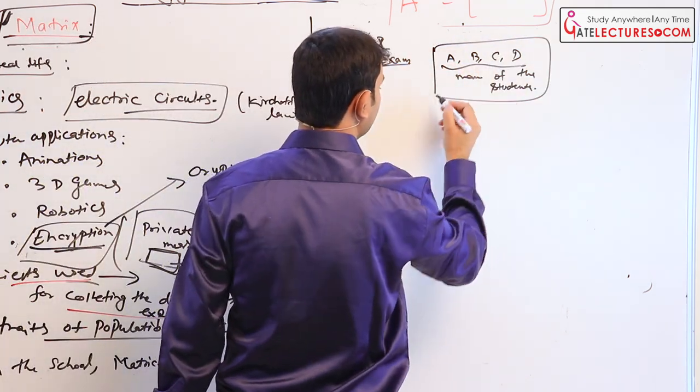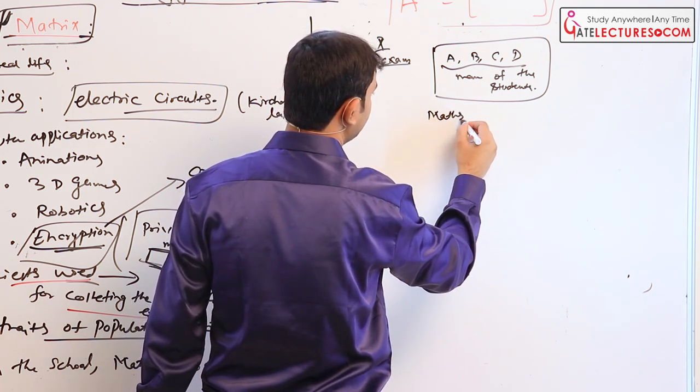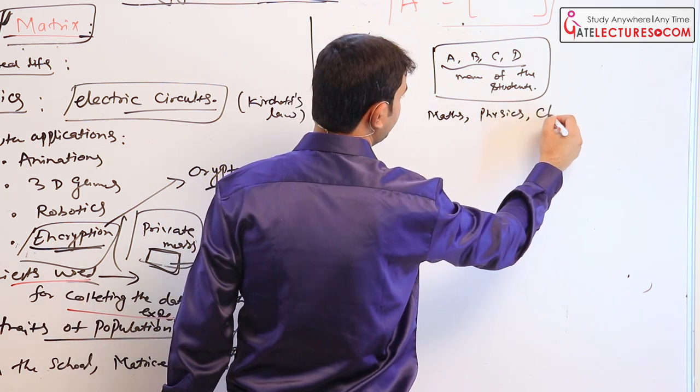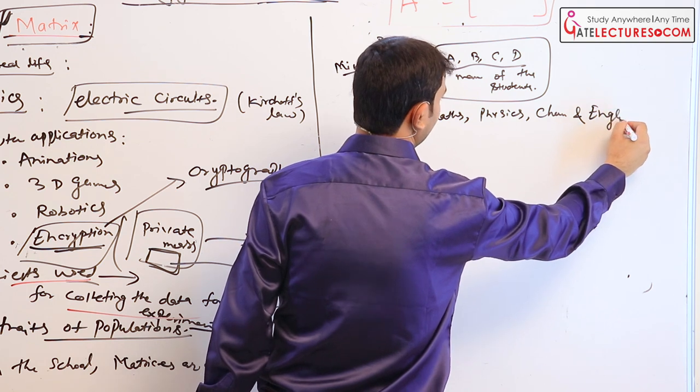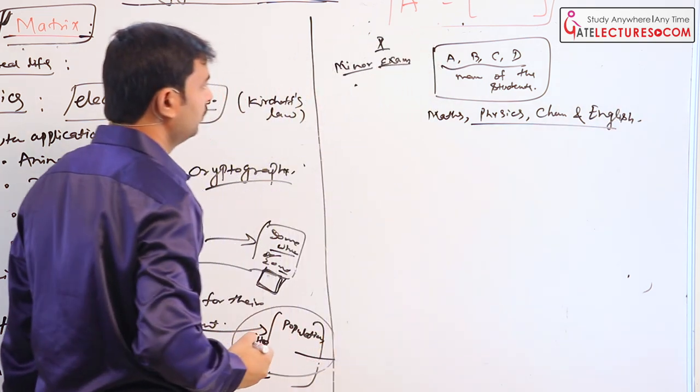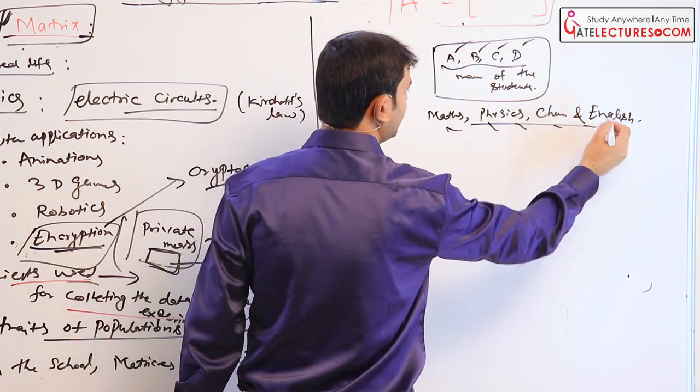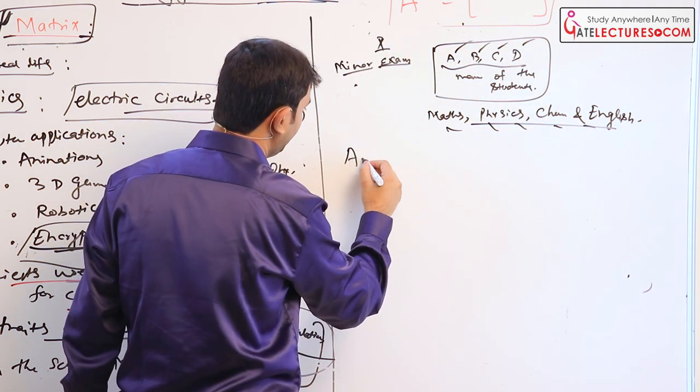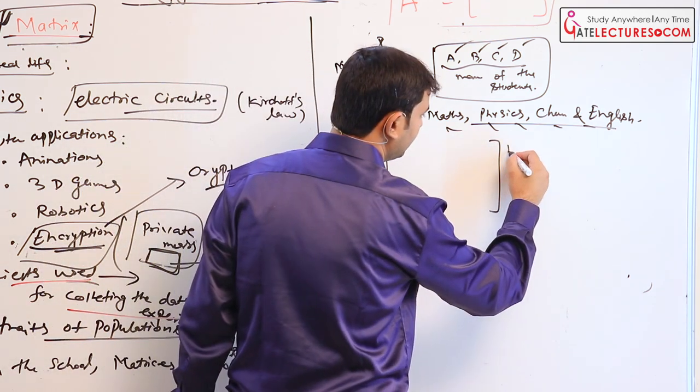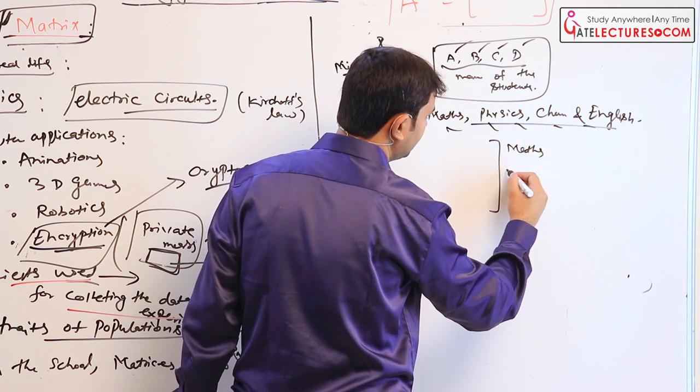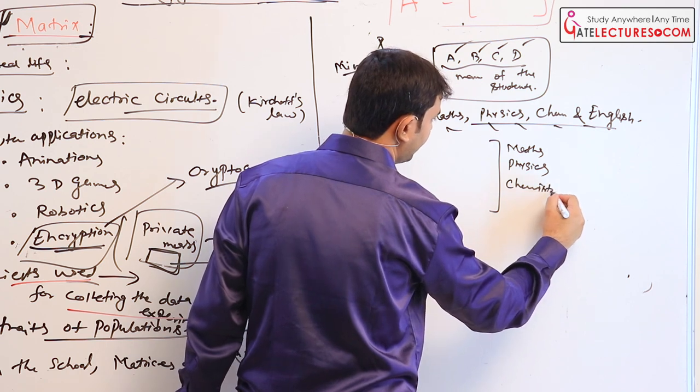Then A, B, C, D are the names of the students and their subjects are suppose maths, physics, chemistry and say English. And if you know all the marks of A, B, C, D in their exams and we write, either you write row-wise the subjects, suppose maths, physics, chemistry and English.